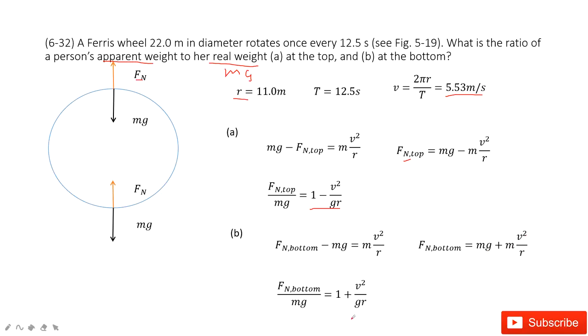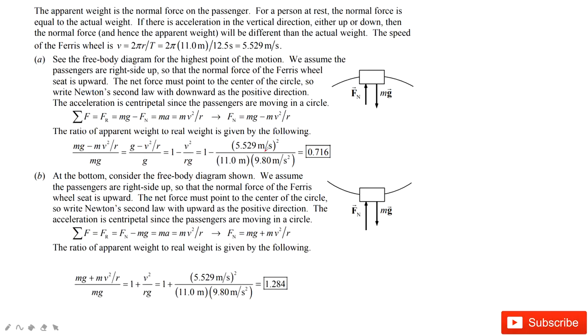In this one, we find the ratio in this term, and still the v, g, r are given. After we input the numbers, we can get the final answer. The first one is 0.7. The second one is 1.3. Thank you.